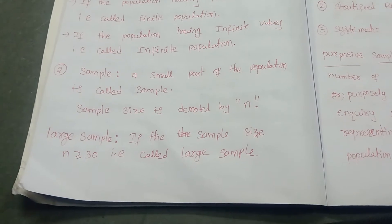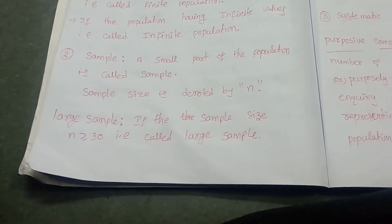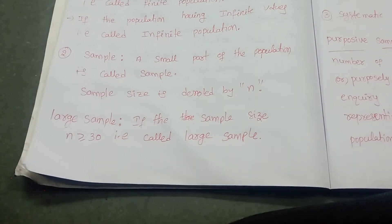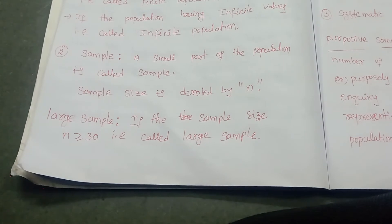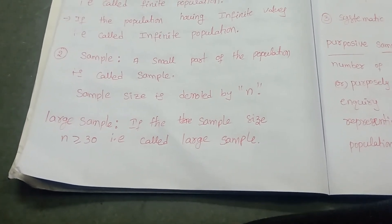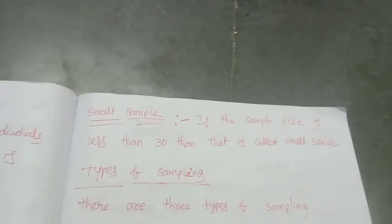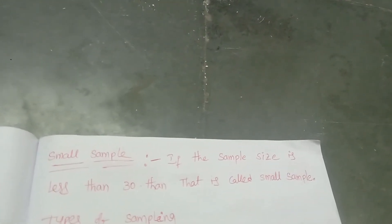The second definition is sample. Sample means a small part of the population is called sample. Sample size is denoted by small n. Samples are generally two types: large sample and small sample. If the sample size n is greater than or equal to 30, it is called large sample. If the sample size is less than 30, that is called small sample.